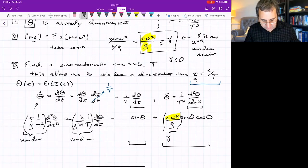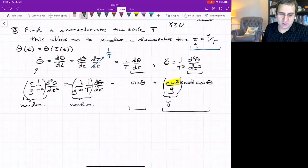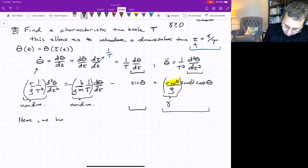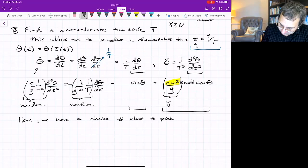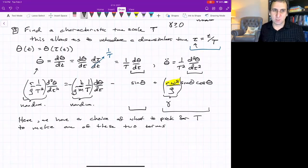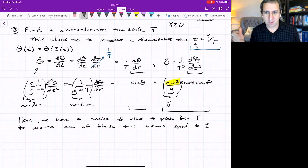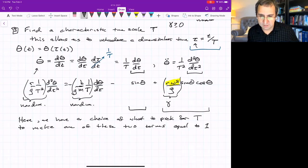And now we have a choice. We're going to pick a characteristic timescale to make one of these non-dimensional parameters equal to 1. This problem's interesting in that there's a choice. Sometimes in other equations, one thing just pops out. Here we have a choice of what to pick for the characteristic timescale. We want to make one of these two terms order 1, but you may as well just set it equal to 1. If one of them is set equal to 1, then the other one will be some number.